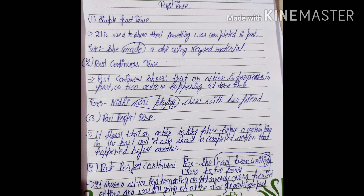Now, past perfect continuous. I also want to mention that the rules for 'since' and 'for' which I told in the previous video will follow the same pattern in past perfect tense. Past perfect continuous shows that an action had been going on continuously over a period of time and was still going on at the time of speaking in the past. For example: 'She had been waiting here for two hours.' Here, 'had been waiting' is showing past perfect continuous tense. If you still have any doubt, you can ask in the comment section.